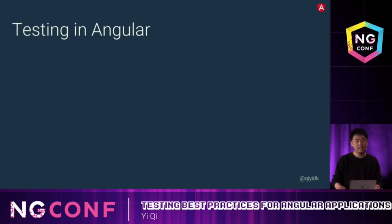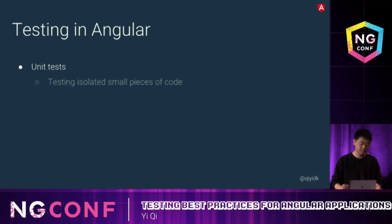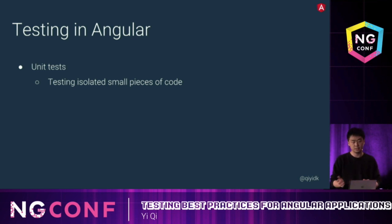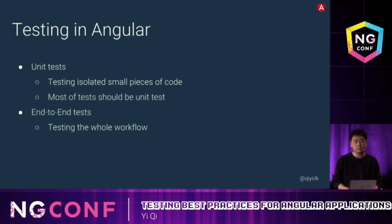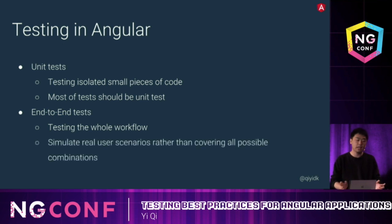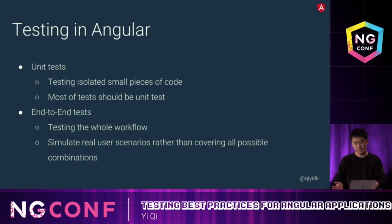First, let's take a look at what we have in Angular. The first thing is unit tests. It's mainly testing isolated small pieces of code. In general, most of our tests should be unit tests, because they run faster and are easier to debug. The next thing is E2E tests. They're mainly focused on testing the whole workflow, and we shouldn't have lots of E2E tests, but each of them should be a good representation of a real user scenario.